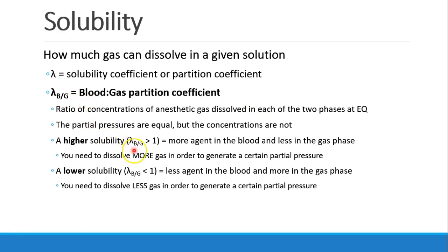When the solubility coefficient is high — greater than 1 — it means there's more agent in the blood and less in the gas phase. We're talking about a soluble agent that's more soluble in blood, and you need to dissolve more gas in that blood in order to generate a certain partial pressure, because we want to achieve equilibrium. A lower solubility, when the coefficient is less than 1, means that you have less agent in the blood and more agent in the gas phase. So you don't need to put very much agent into the blood before it becomes saturated and you start generating a partial pressure, and then you can have equilibration of the partial pressures.